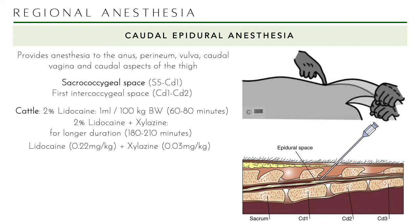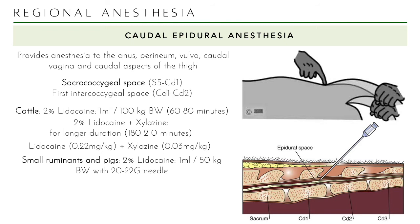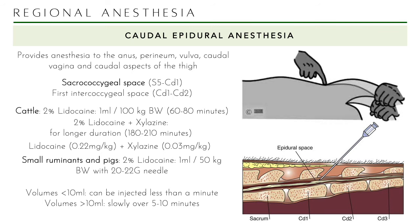Lidocaine and xylazine can be mixed in the same syringe, then instilled into the epidural space. For small ruminants and pigs, use 2% lidocaine at 1 ml per 50 kg — remember, small ruminants are very sensitive to lidocaine toxicity. The volumes of lidocaine and injection speed also matter. For less than 10 ml, you can inject in under a minute. Volumes greater than 10 ml should be given slowly over 5 to 10 minutes to prevent rapid spread, which can cause mechanical compression of nerve endings and sudden recumbency in the patient.